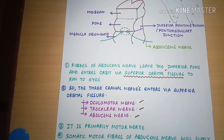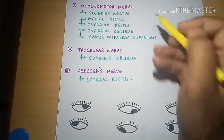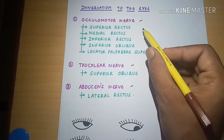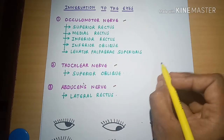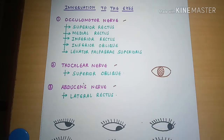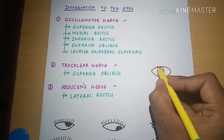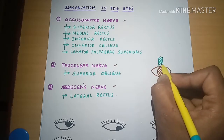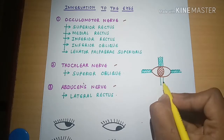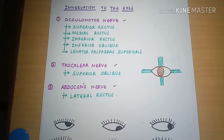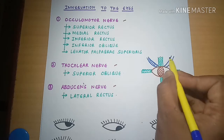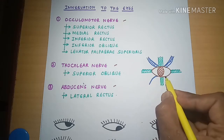There are three nerves that supply the eye: the oculomotor nerve, the trochlear nerve, and the abducens nerve. If I draw an eyeball here — this is the eyeball — it has a superior rectus muscle, a medial rectus muscle, a lateral rectus muscle, an inferior rectus muscle, a superior oblique muscle, and an inferior oblique muscle.